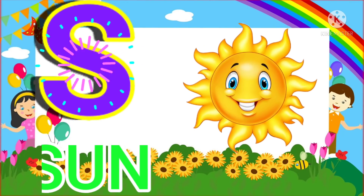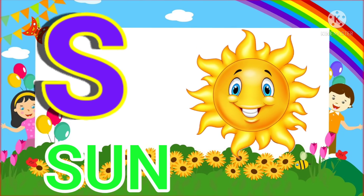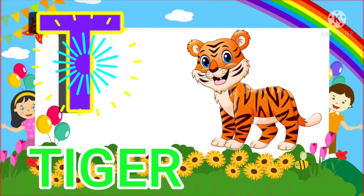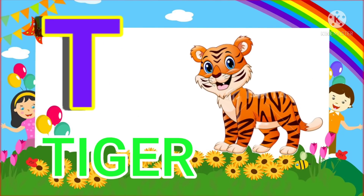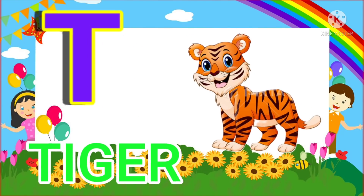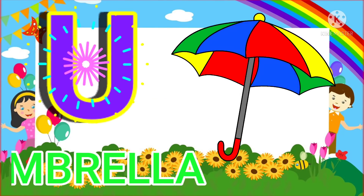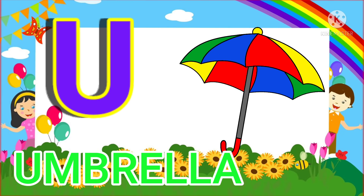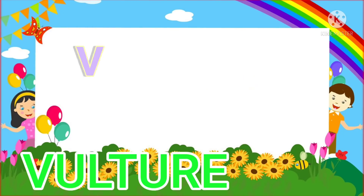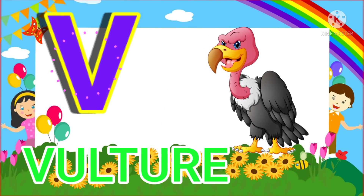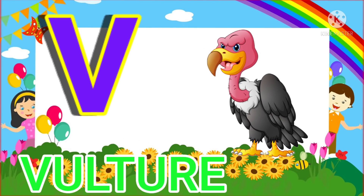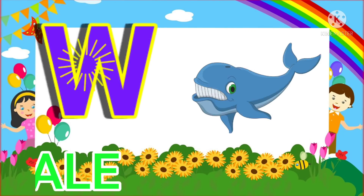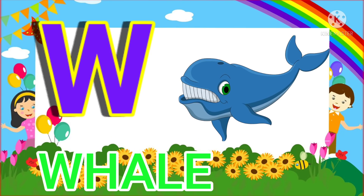S for sun. T for tiger. U for umbrella. V for vulture. W for whale.